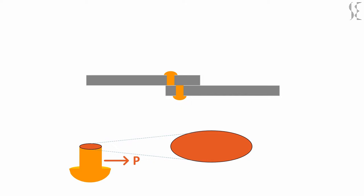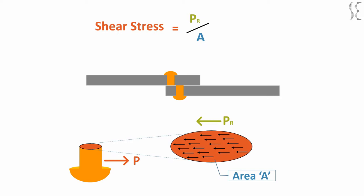In this arrangement, force P is the shearing force and the stresses it produces in the cross sectional area is the shear stress. So shear stress in this arrangement will be force resisted by rivet PR divided by cross sectional area of rivet A.